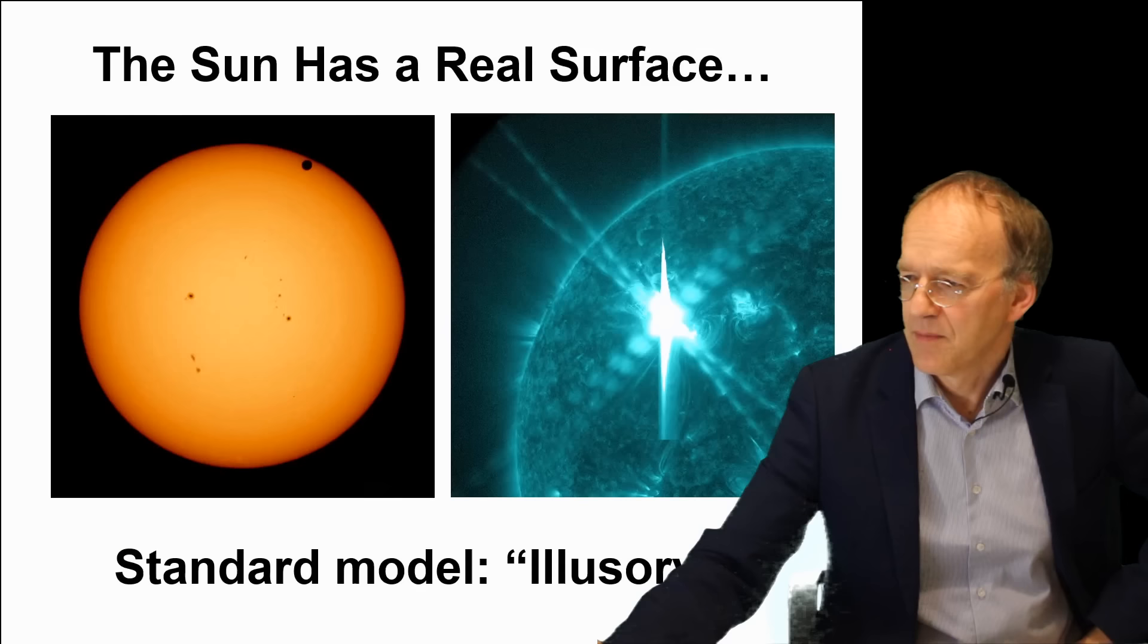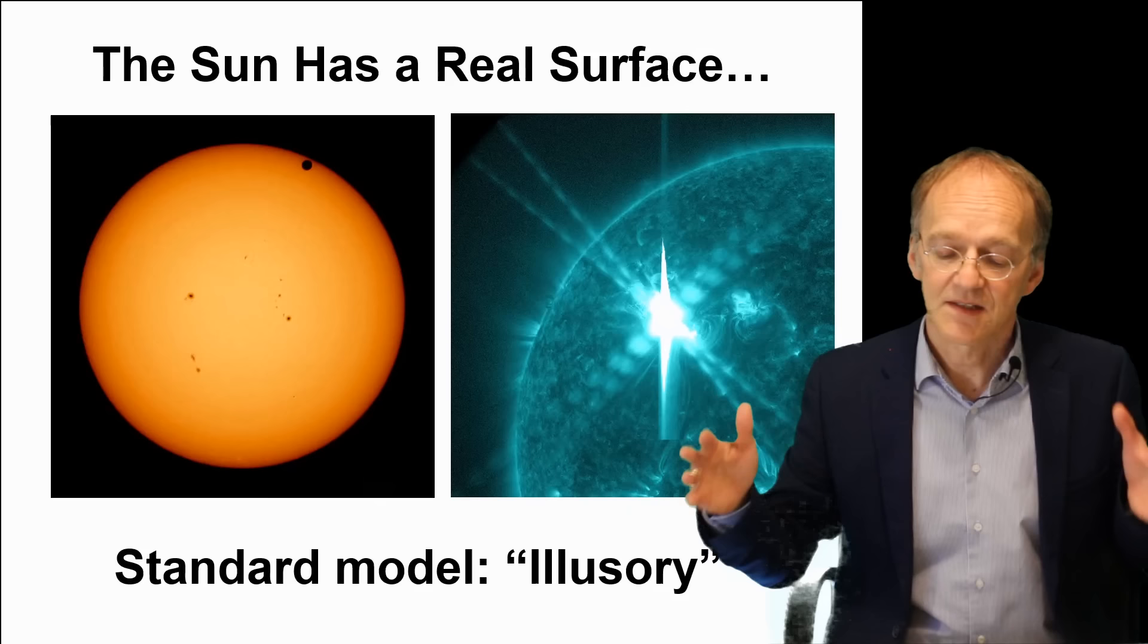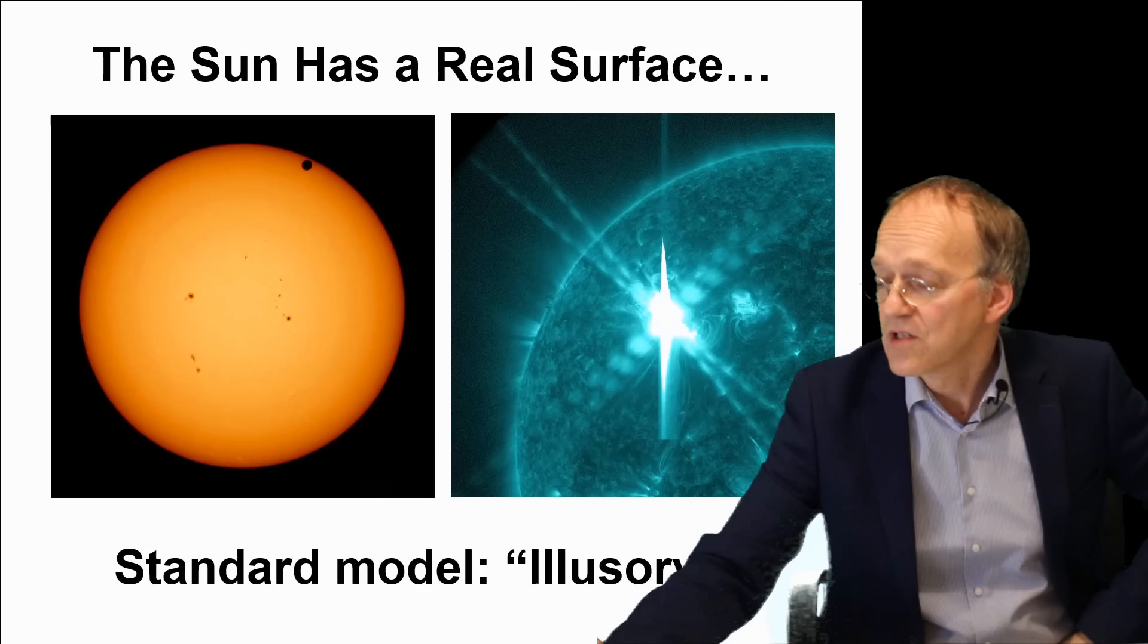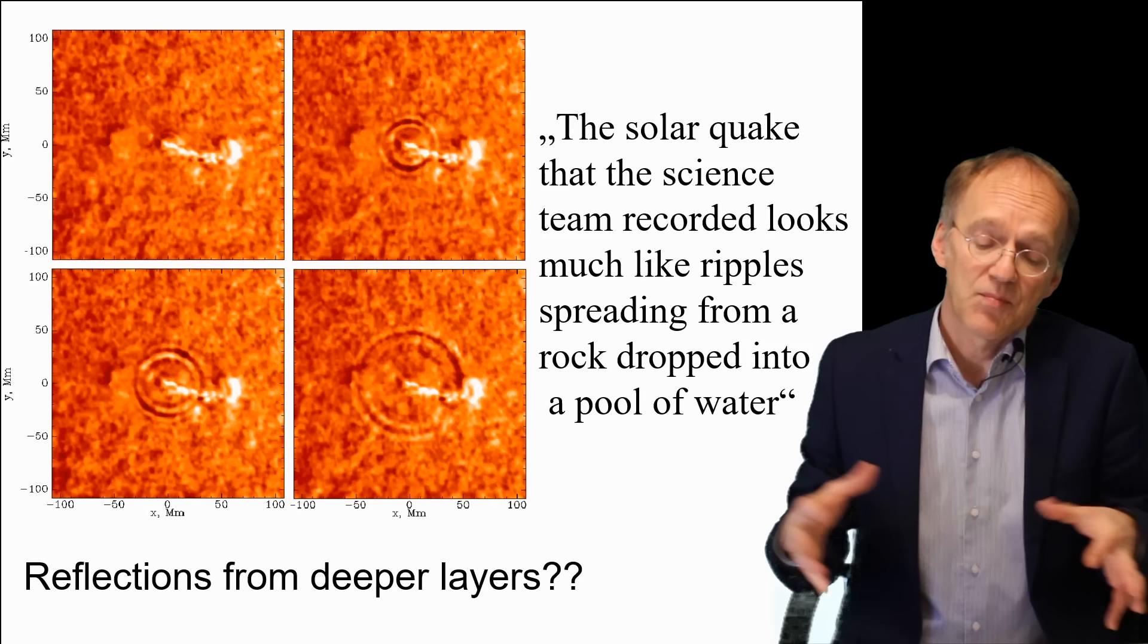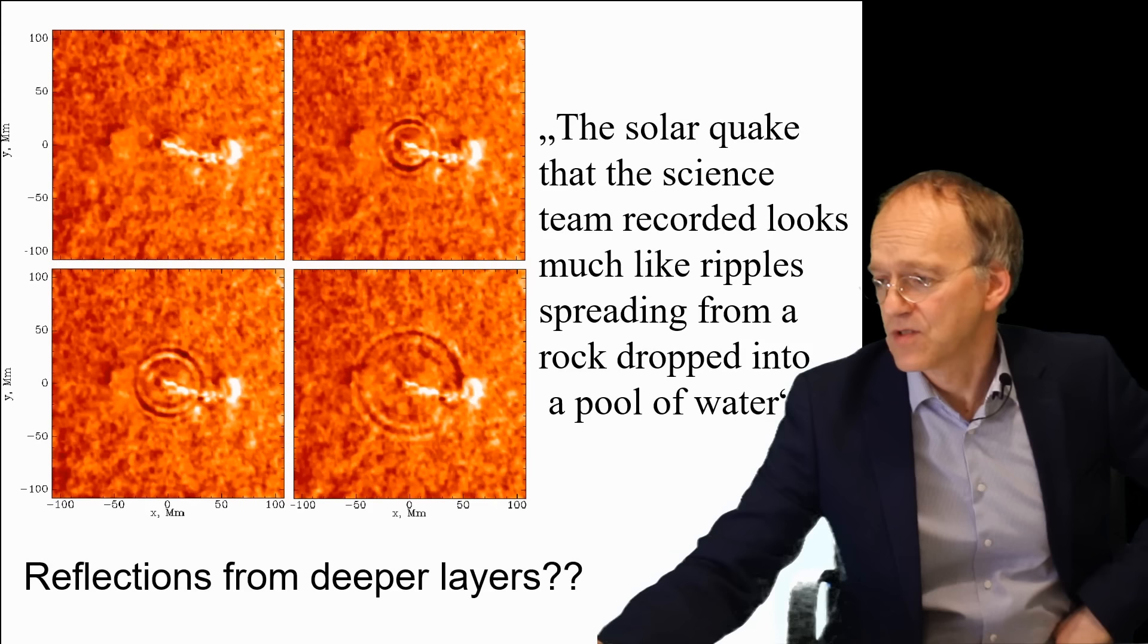However, the basic problem is: if you look at the Sun, you see a surface. All visual evidence points to a distinct surface, and the standard model has to deny, has to say this surface is only illusionary. There's lots of evidence that this is a real surface. Just look at this sun quake – that's also a coronal mass ejection – and what you see is just a propagating wave, like ripples in a pond. That's what you see.